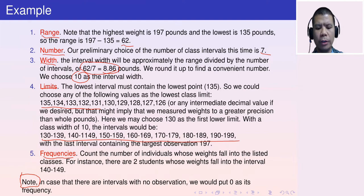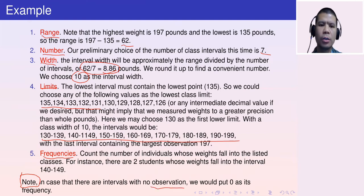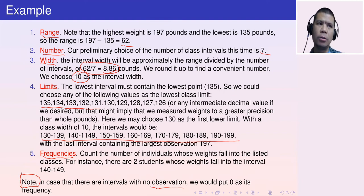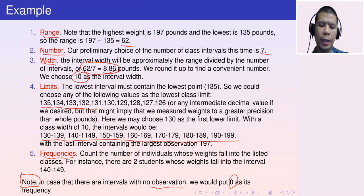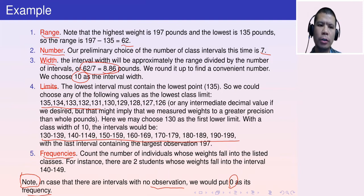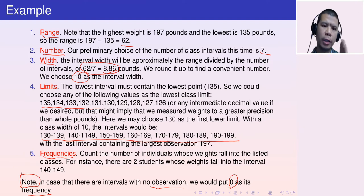In some cases, there may be intervals with no observations. For those intervals, put zero as the frequency — you cannot delete them just because their frequency is zero.